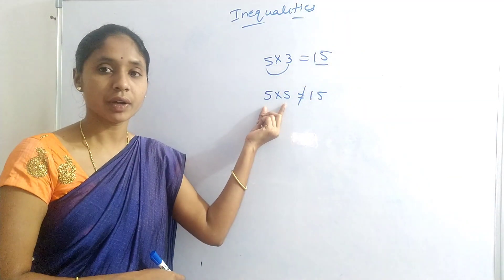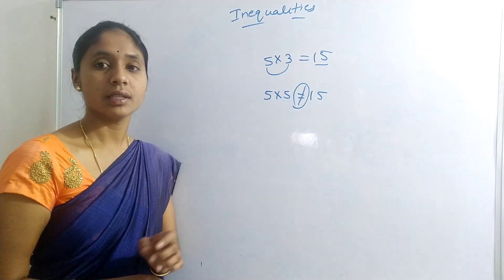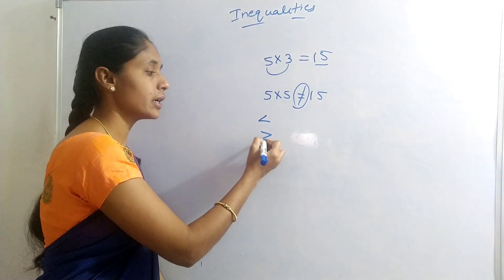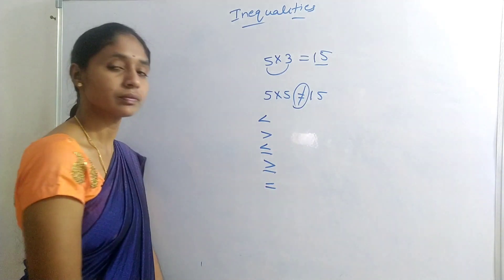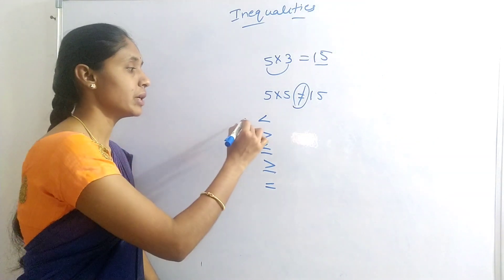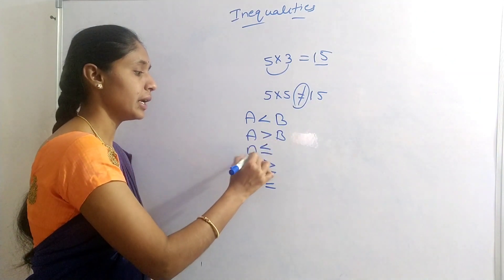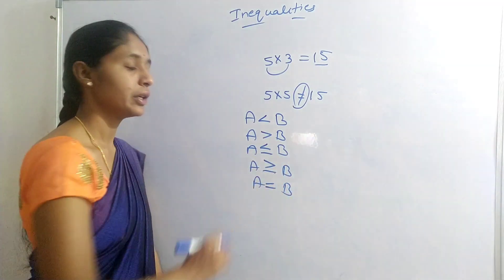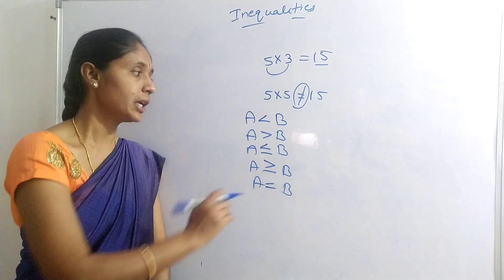We denote inequality with specific signs. We have different inequality signs: less than, greater than, less than or equals to, greater than or equals to, and equals to. In inequalities, we compare two elements: A greater than B, A less than B, A greater than or less than or equals to B, and A equals to B.